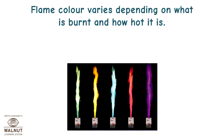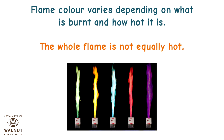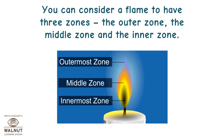Flame color varies depending on what is burnt and how hot it is. The whole flame is not equally hot. You can consider a flame to have three zones: the outer zone, the middle zone, and the inner zone.